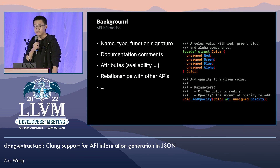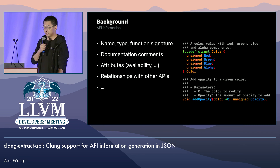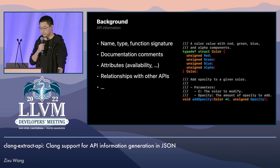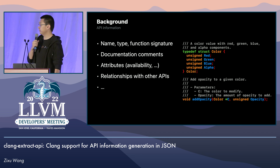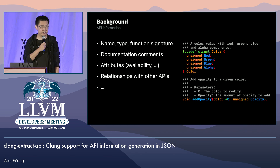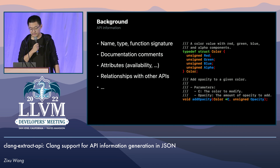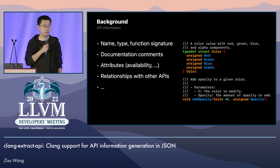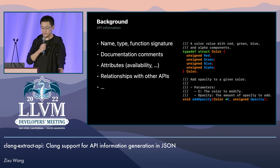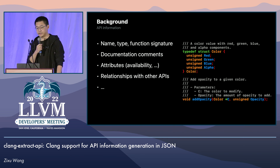The information I'm interested in includes the name and type of each API symbol, the function signature if it's a function, comments attached to the APIs as documentation, any declaring attribute — for example, when it was introduced or deprecated — and also relationships between the APIs.